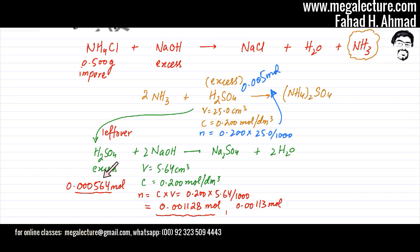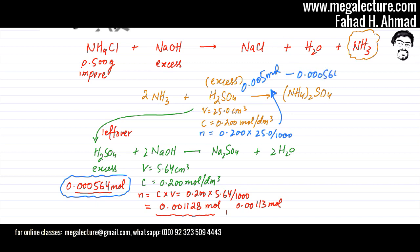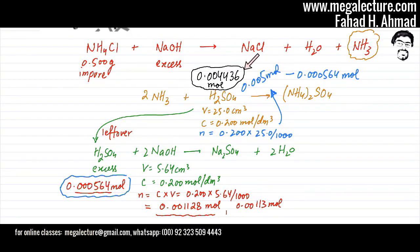We have the moles added and the moles left over, so the moles that actually reacted with ammonia = 0.005 − 0.000564 = 0.004436 moles. So 0.004436 moles of sulfuric acid actually reacted with ammonia.